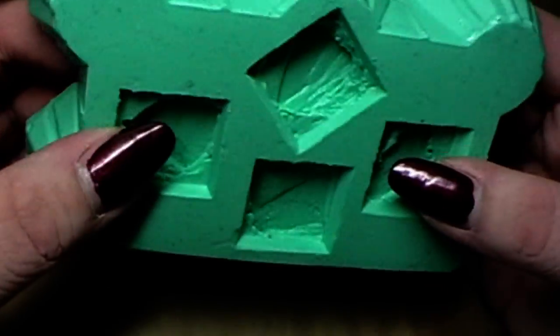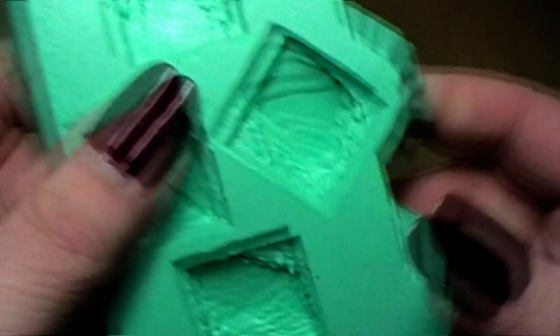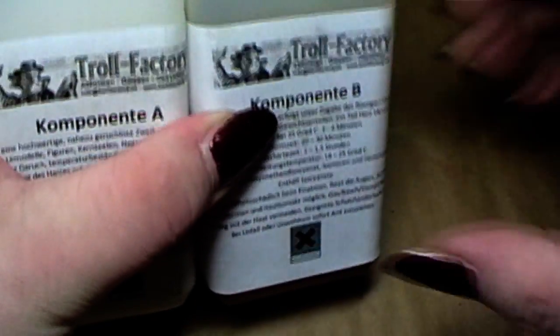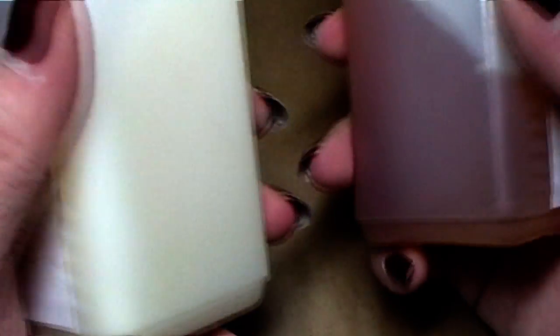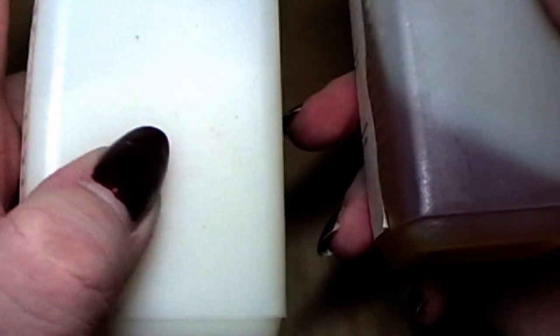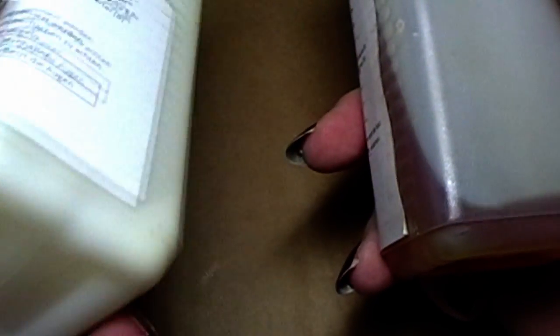In order to cast now you need several things. First of all your mold, then you will need your casting resin. This is a two component resin and you can find this stuff on eBay, just type in resin, two part resin or something like that.